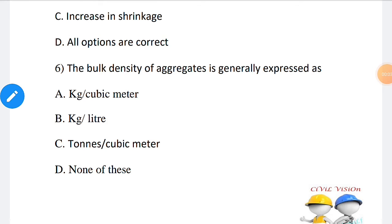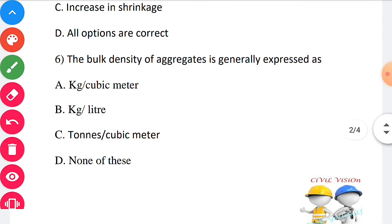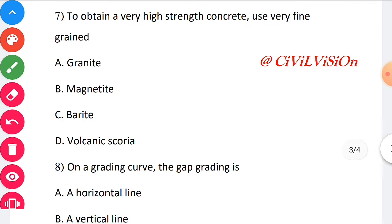Sixth one: To obtain a very high strength concrete, use very fine grind? The correct answer for this question is option A: granite. Granite offers greater compressive strength. Therefore, very high strength concrete is obtained by using very fine grind granite.